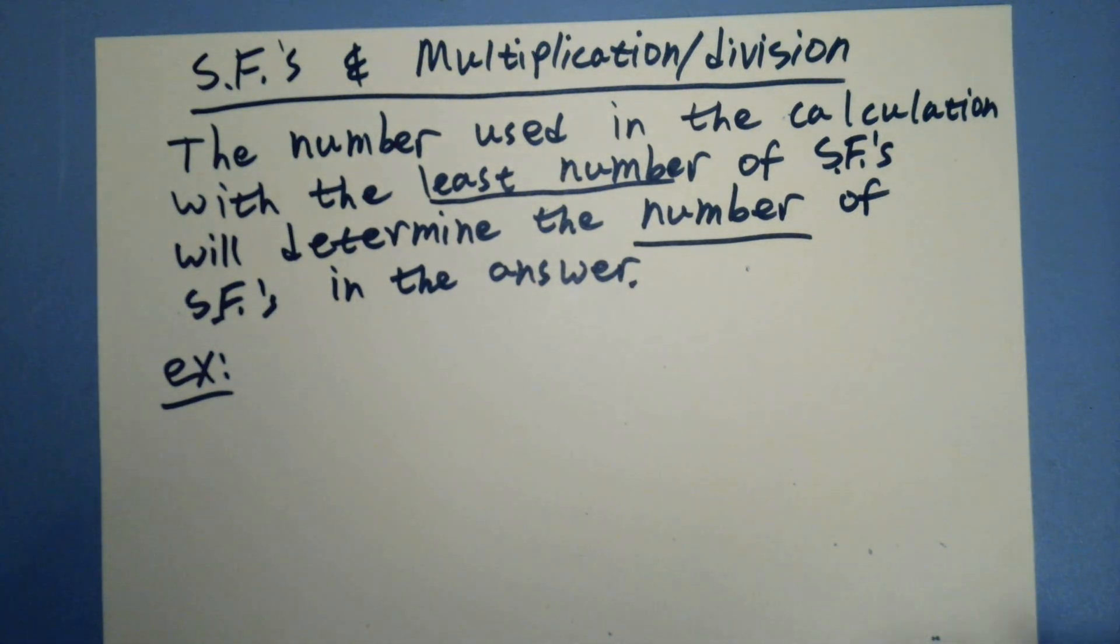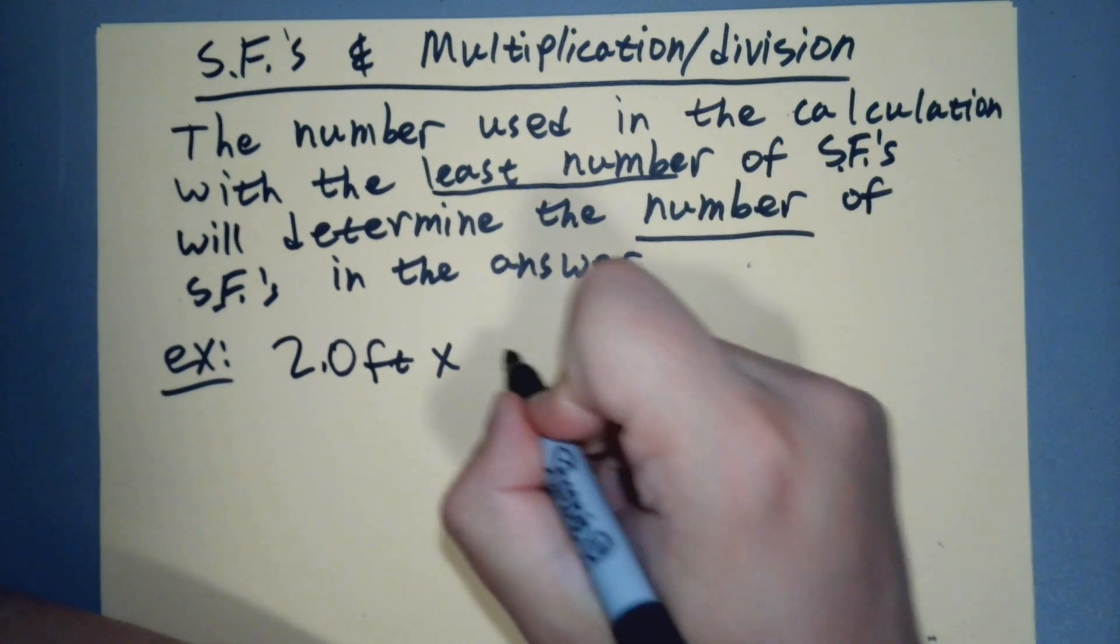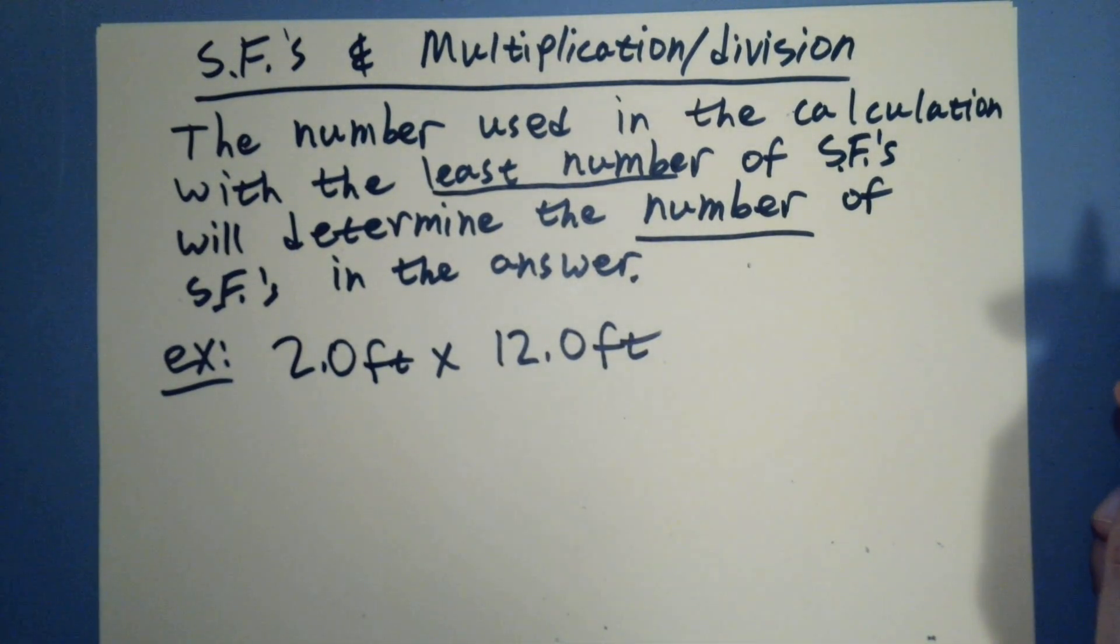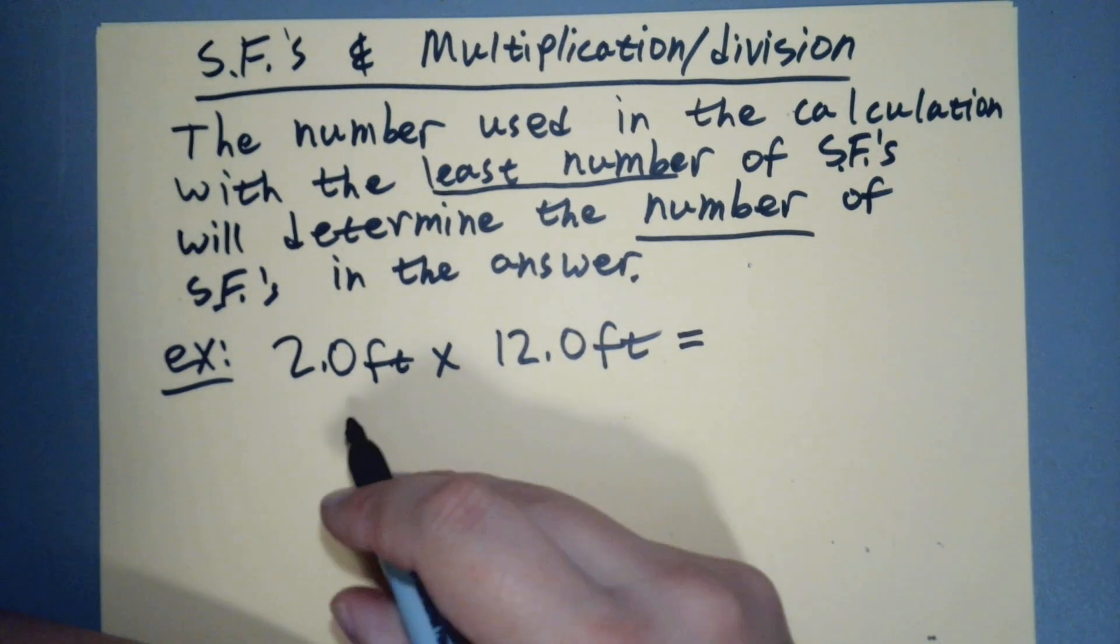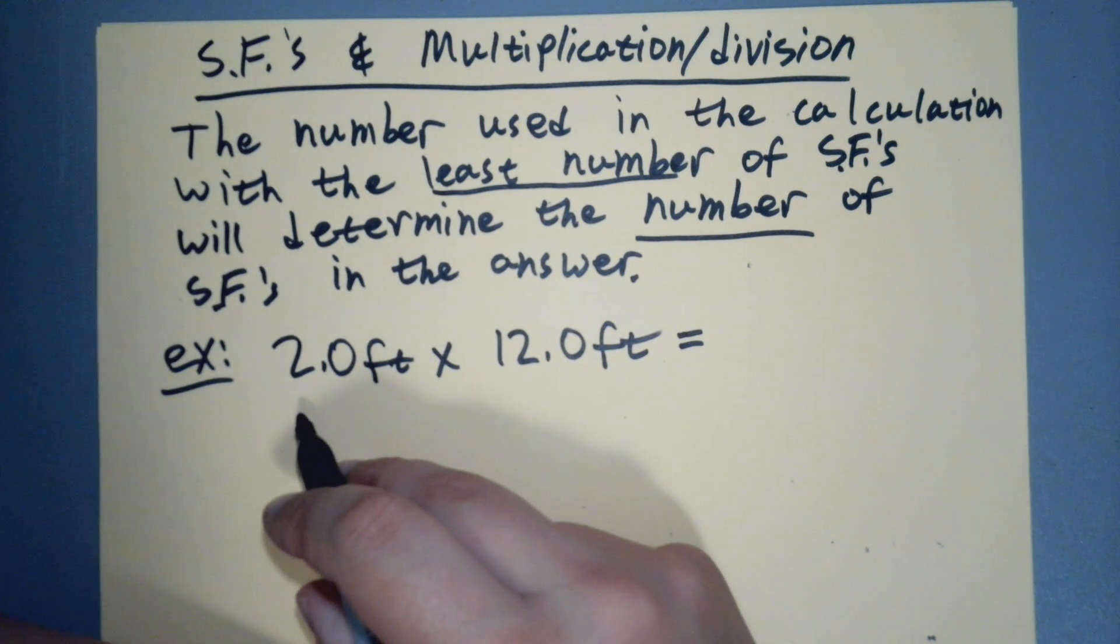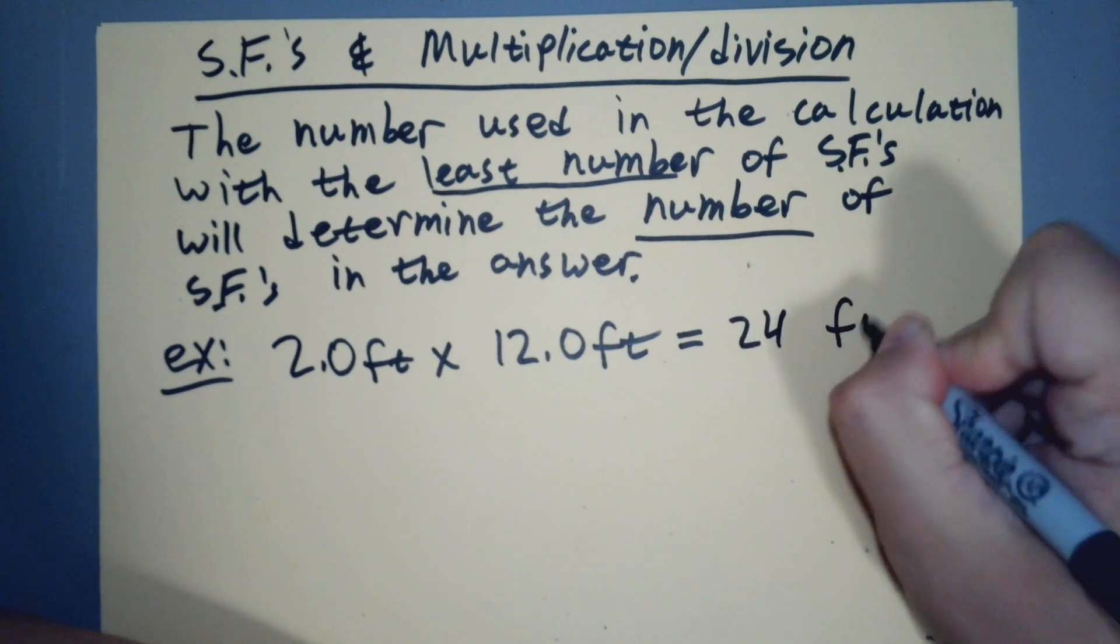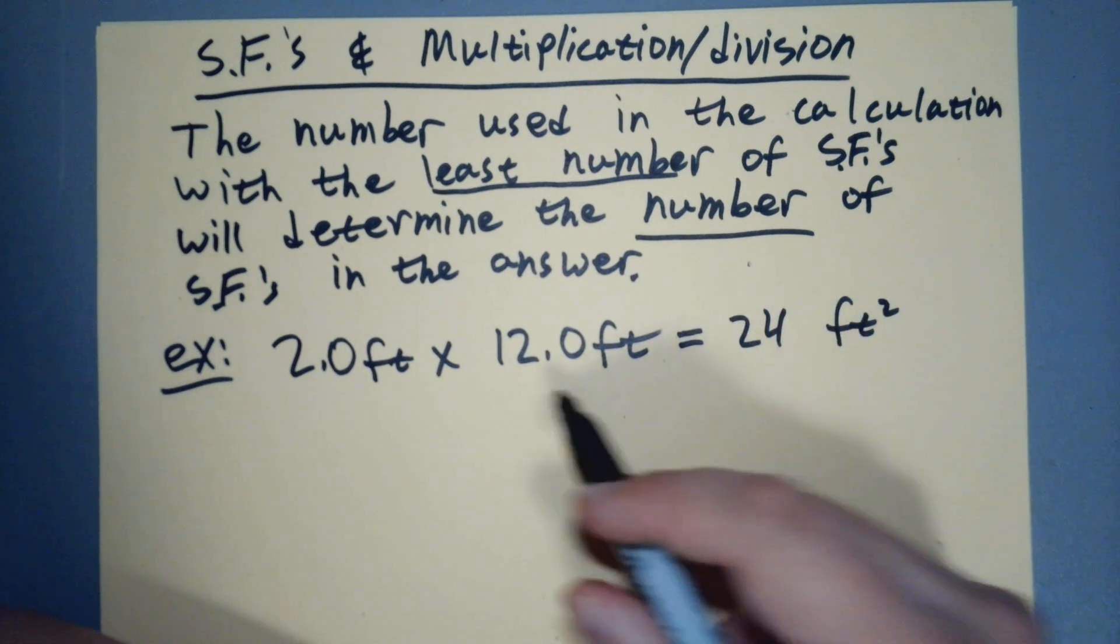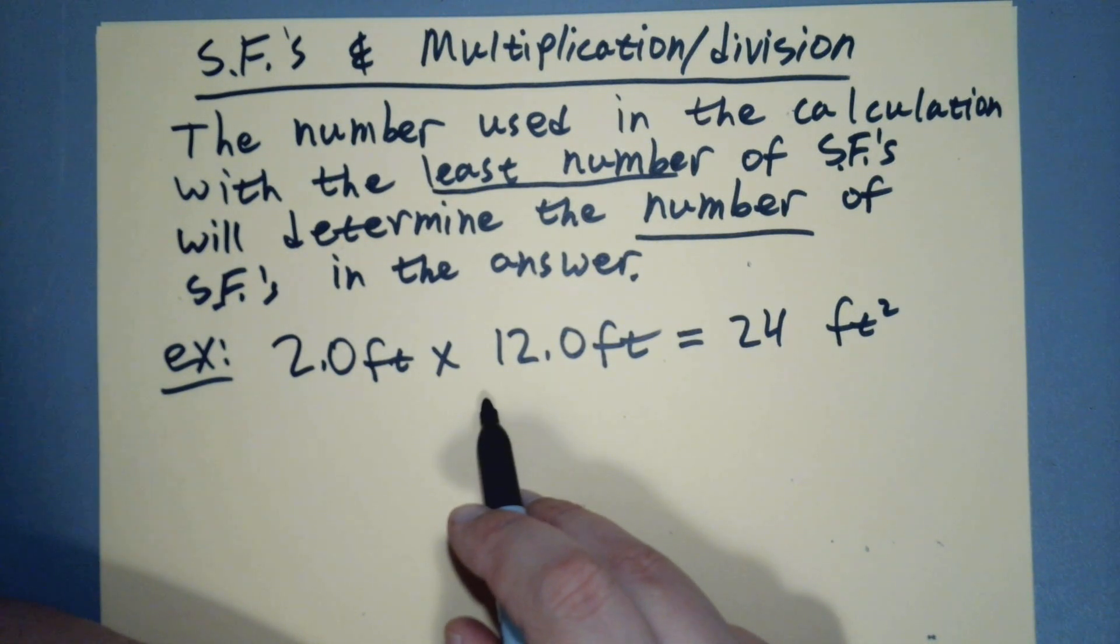So, least number of significant figures or significant digits. So again, it's just that our answer can't be better than our worst number. If you want a better answer, make a better measurement. That's what this all boils down to. But now, instead of precision, we're talking about number of significant digits. And so we don't have to do a little aside here. We don't need to talk about precision or anything like that. Let's do an example. So let's say I'm moving to Manhattan and I measure a prospective apartment. And it's like, you know, 2.0 feet by, we'll say, 12.0 feet.